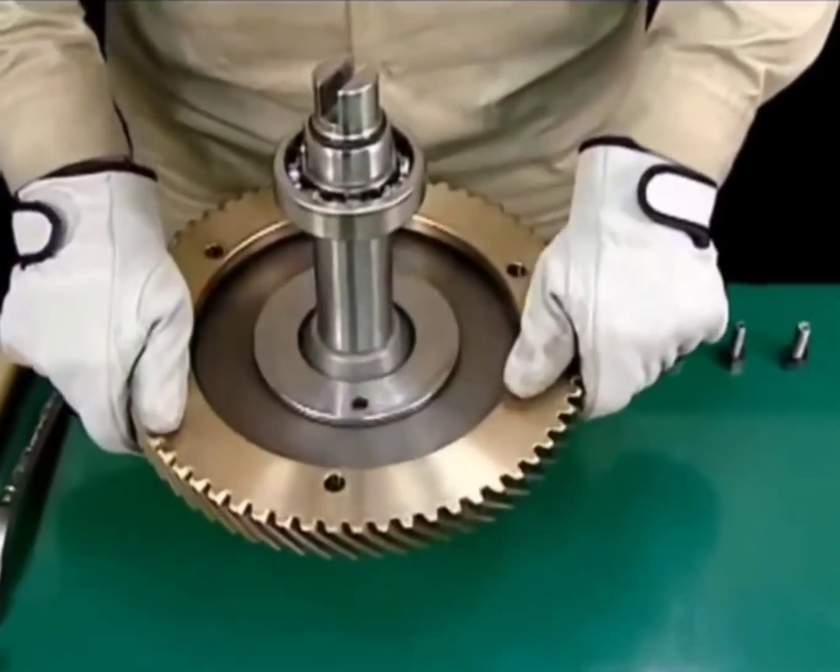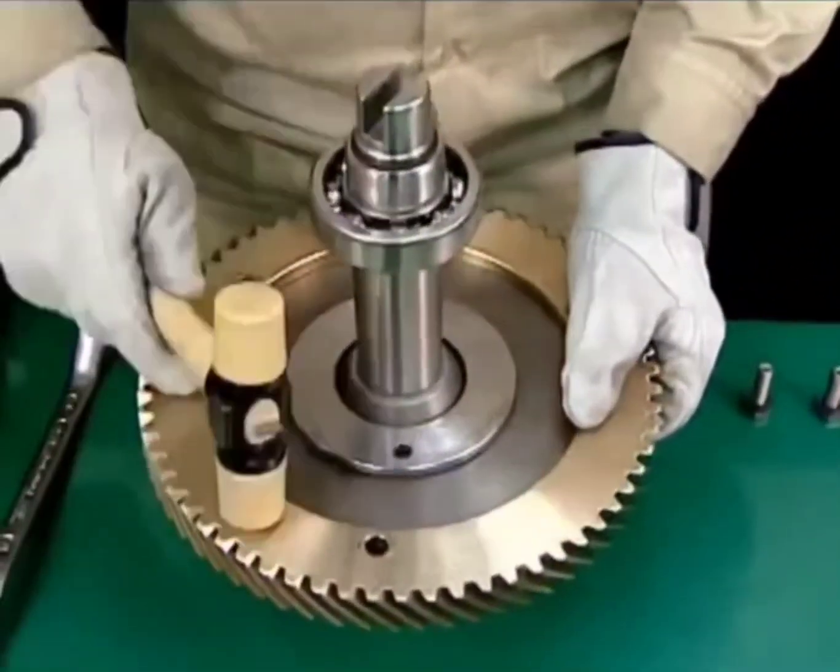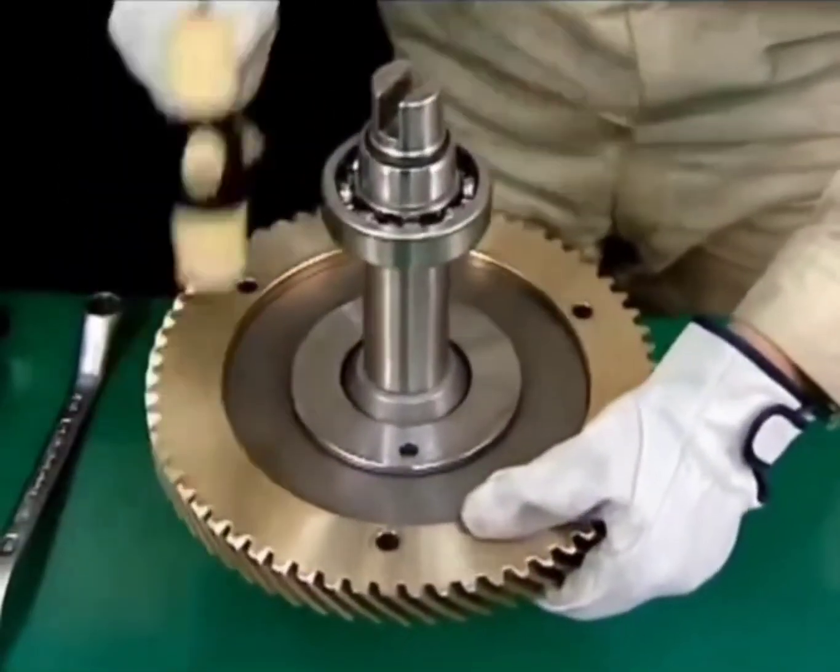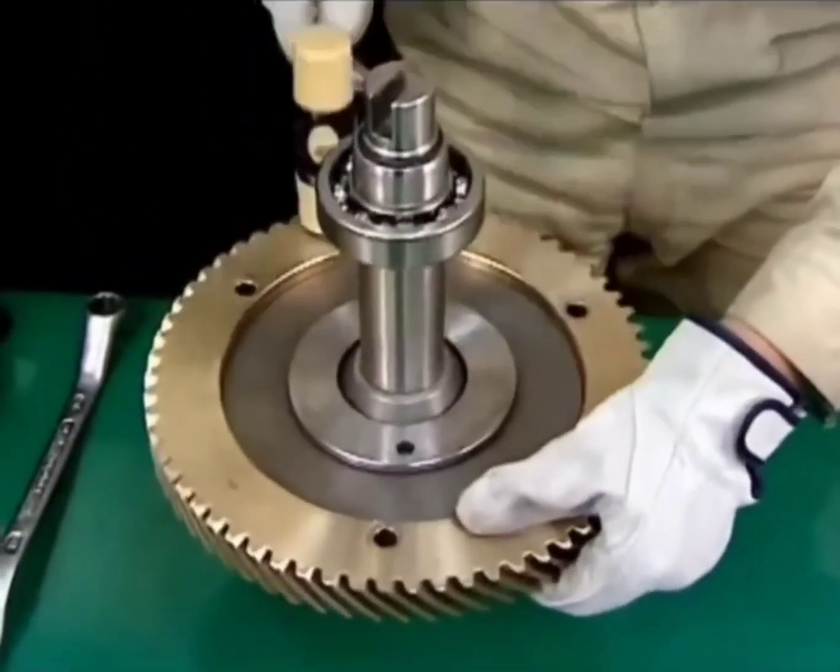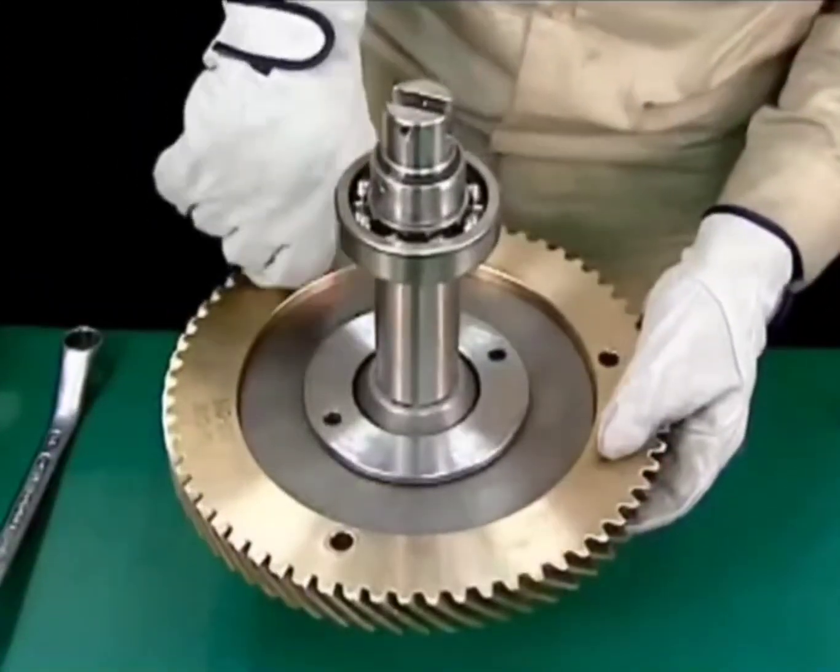Align the spiral gear with the gear boss at the bolt hole and tap it in evenly with a plastic hammer. Fasten with the spring washers and bolts.